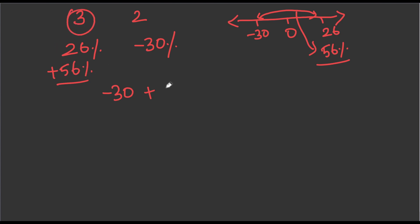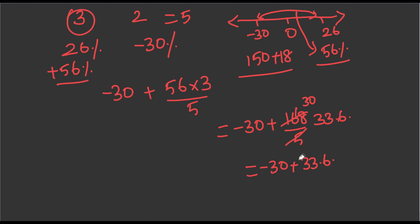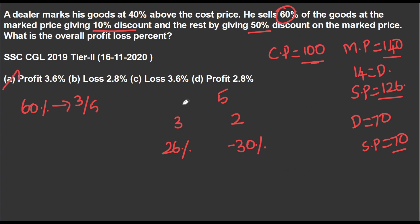There are 3 goods with this deviation. So 56 into 3, divided by 5. Then minus 30 plus 56 into 3. So 50 into 3 is 150, plus 6 into 3 is 18 — that's 168 divided by 5. So 33 point 6. Minus 30 plus 33.6 gives 3.6 percentage. So the profit percentage is 3.6%.